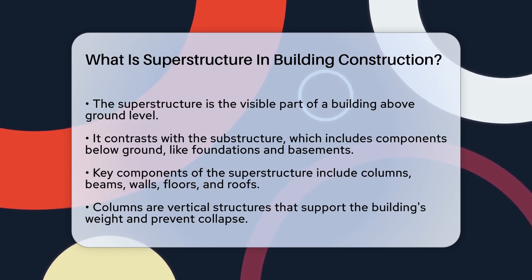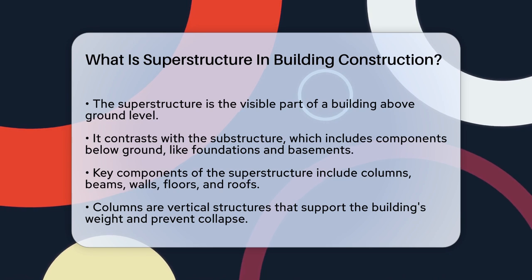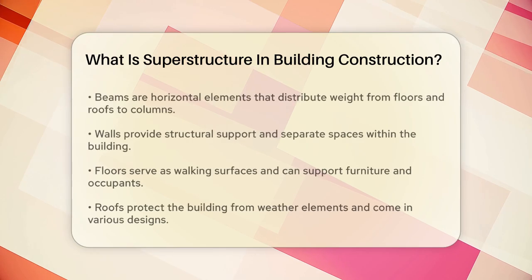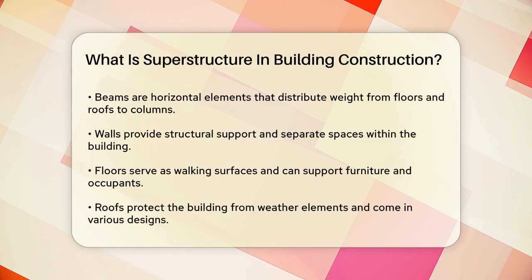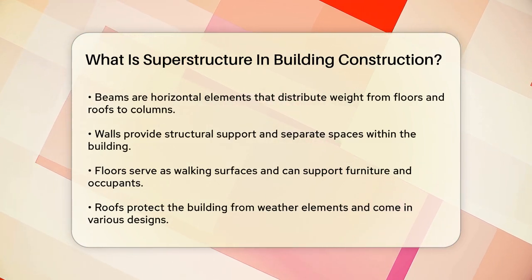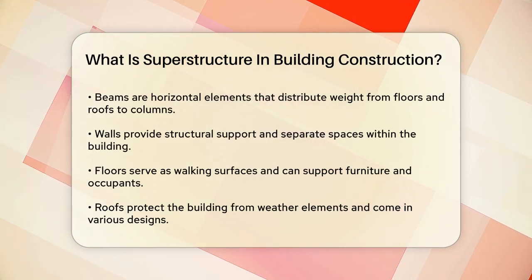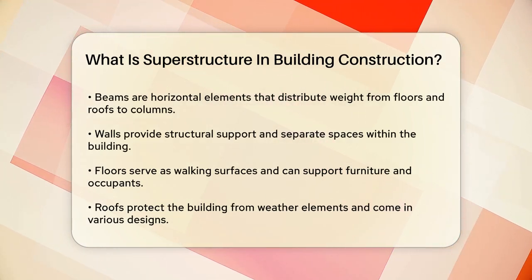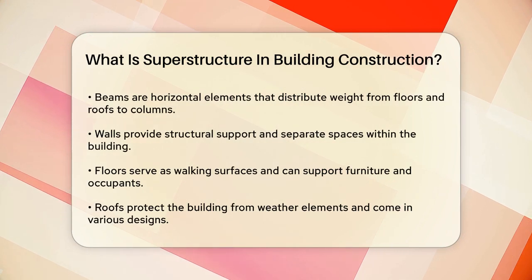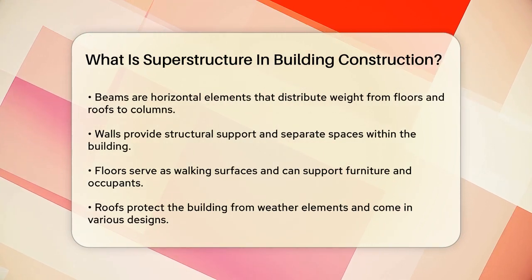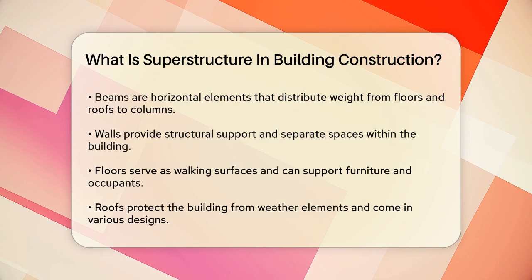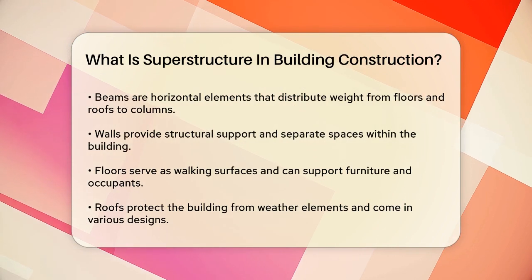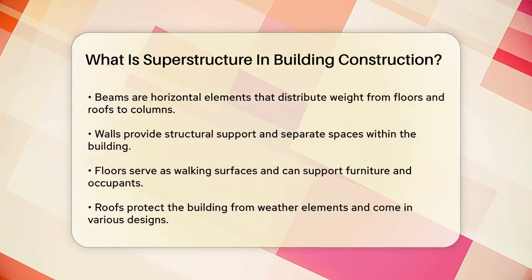Let's start with the basics. The superstructure is made up of several key components. First, there are the columns, which are vertical structures that carry the weight of the building down to the foundation. These columns are crucial because they prevent the building from collapsing under its own weight or from external forces like wind or earthquakes.